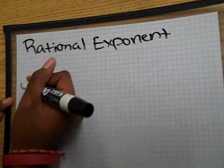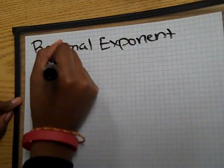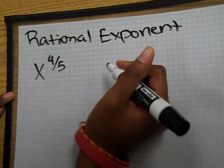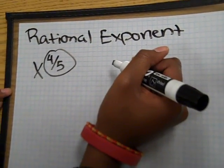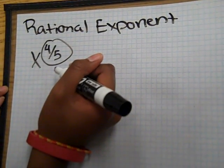OK, in the following exponent x to the 4 over 5, 4 over 5 is the exponent. Since it's a fraction, we have to get rid of the denominator so it could be a whole number.